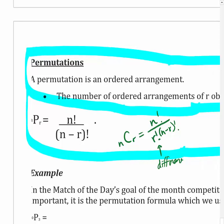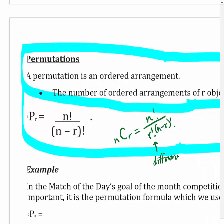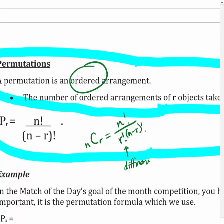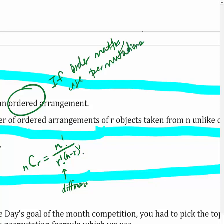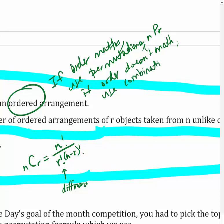The hardest part of this section is knowing when to use which formula. The main distinction is ordered arrangements. I would ask myself: does order matter? If order matters, use permutations. If order doesn't matter, use combinations (nCr).